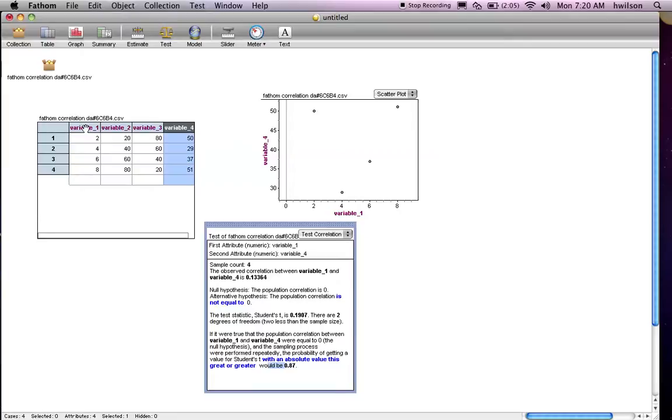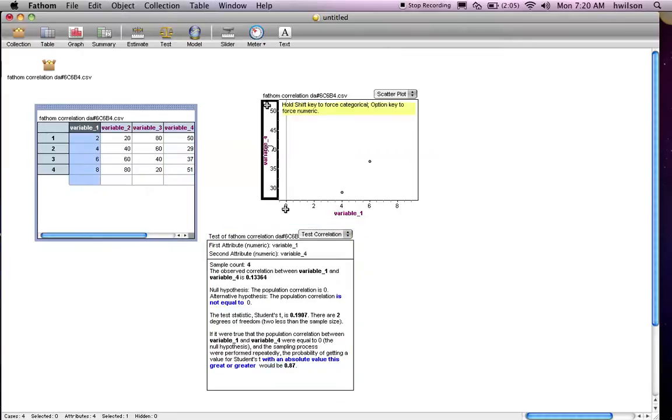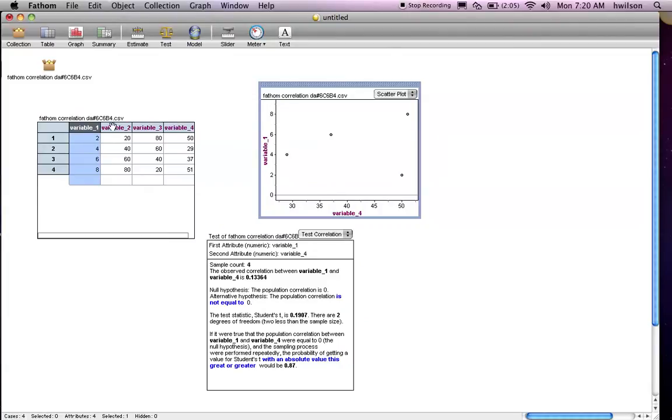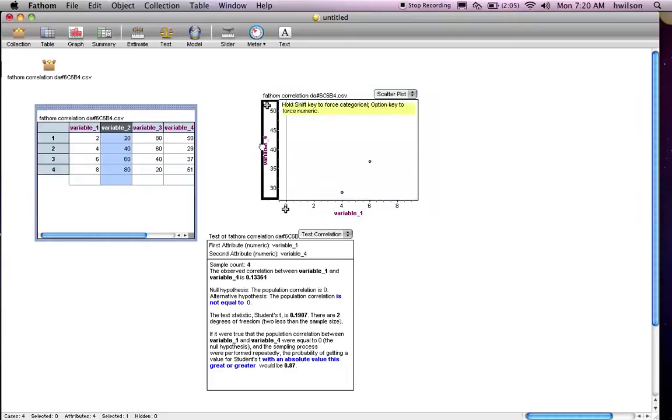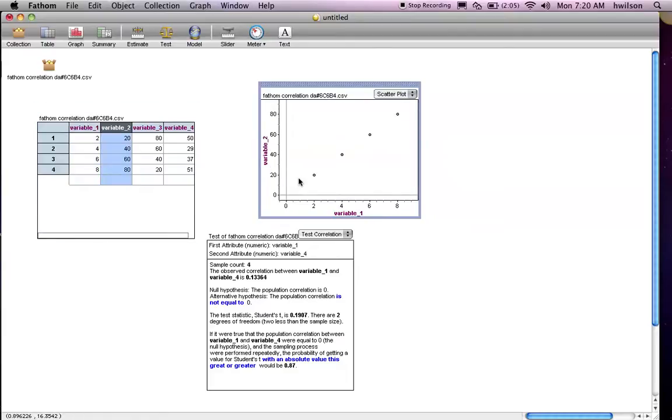One thing about correlation I should mention is that if we see a correlation between variable 1 and variable 2, we don't know if it's because variable 1 causes variable 2 to increase, or if there's some third variable that causes both of them to increase. So we can't make that conclusion just from this data alone.